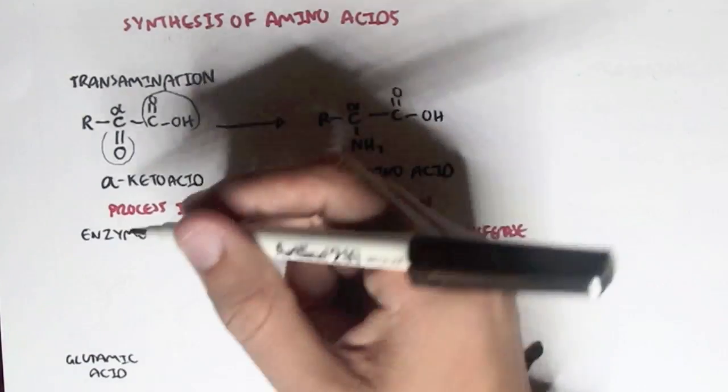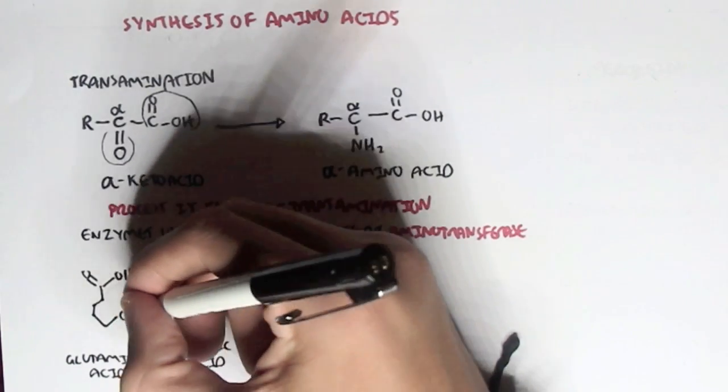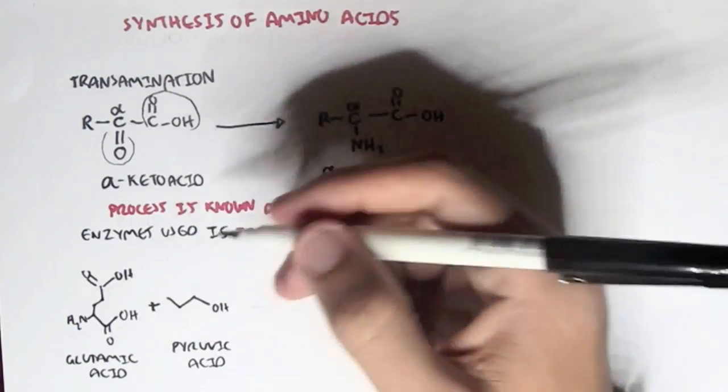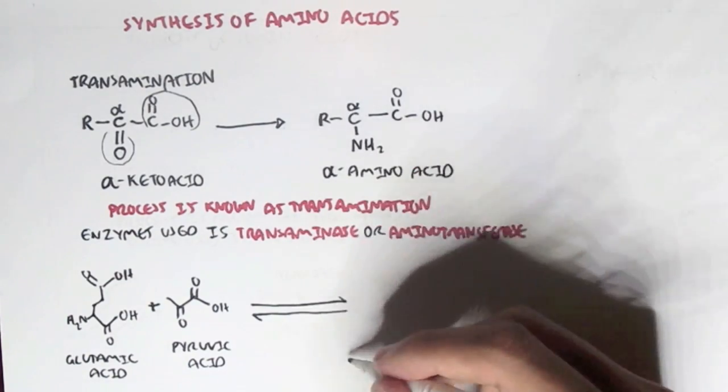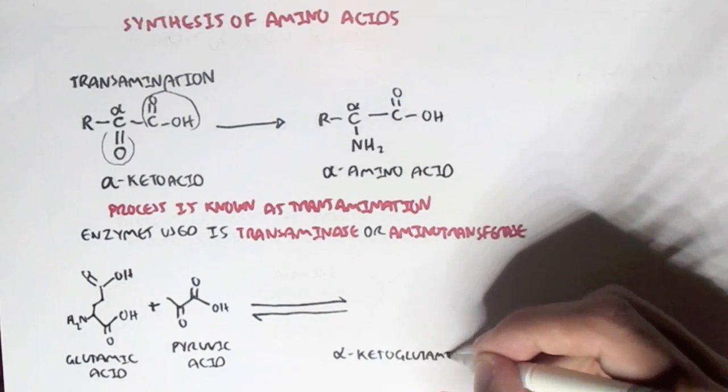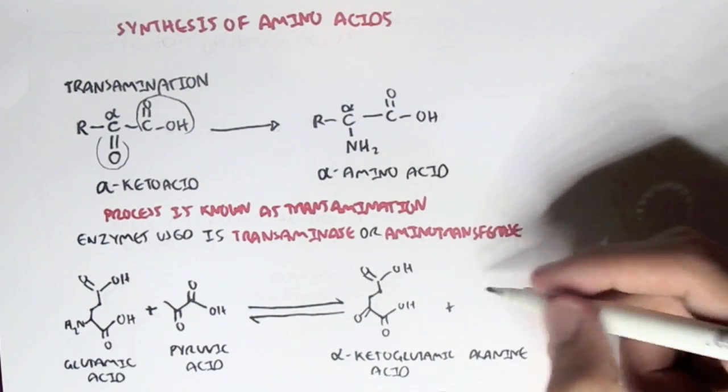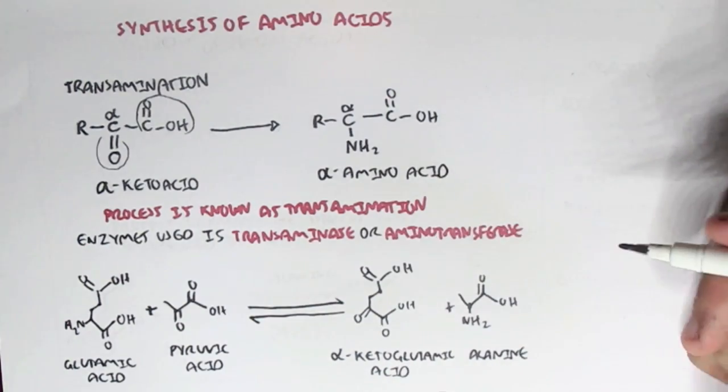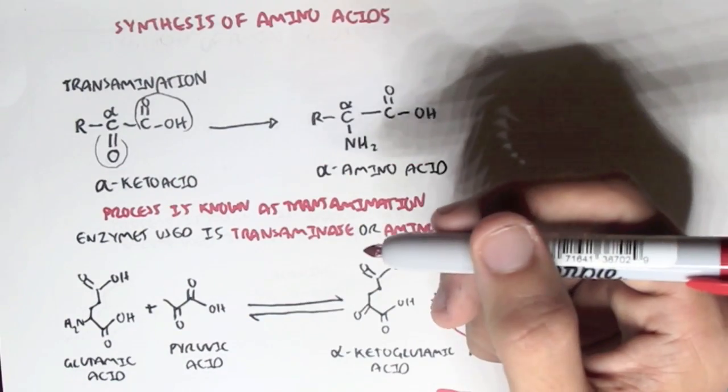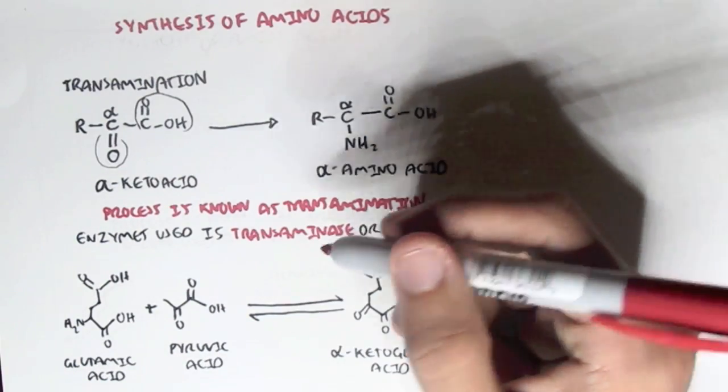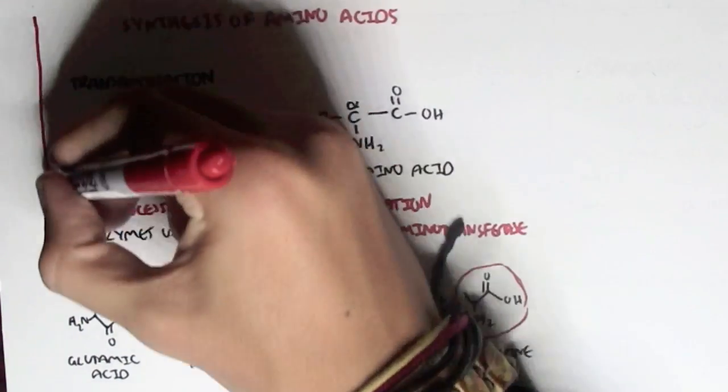Let's look at one example. If we have glutamic acid plus pyruvic acid, with one enzyme, will yield alpha-keto glutamic acid and also alanine. Alanine is the amino acid, where the amino group is transferred from the glutamic acid into the pyruvic acid, making alanine. The enzyme used is known as alanine transaminase or ALT.